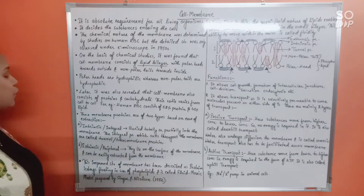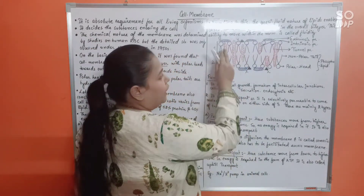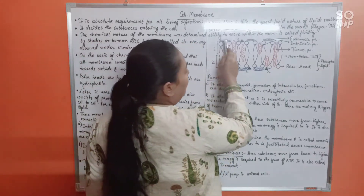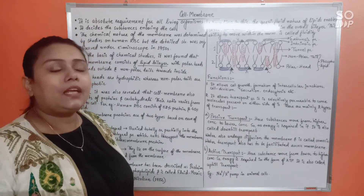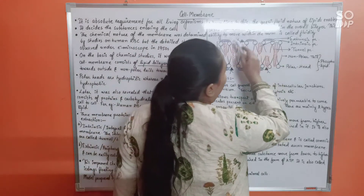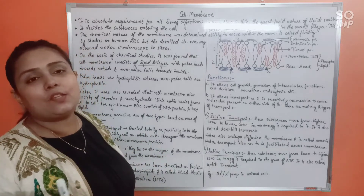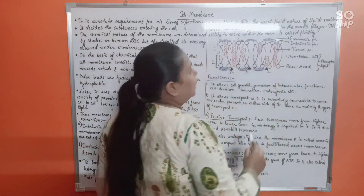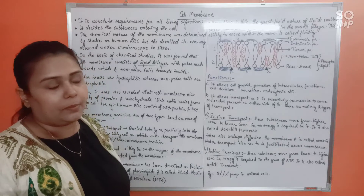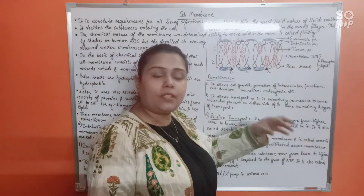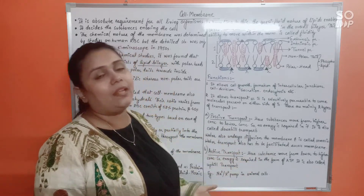Membrane proteins are of two types based on ease of extraction. In the phospholipid bilayer diagram, you can see blue structures towards the outside and red structures towards the inside. The blue proteins towards the outside are called extrinsic proteins and can be easily removed from the membrane. The red ones are called intrinsic proteins because they are fully or partially embedded inside the membrane and are not easy to extract.